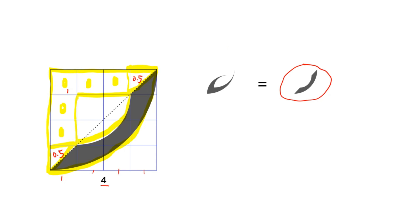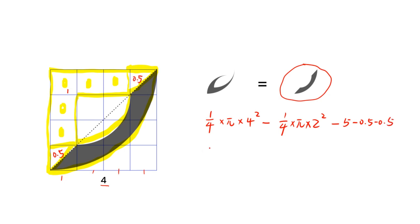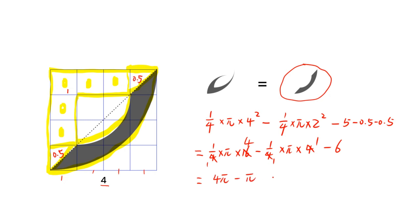So the gray shaded area is: one quarter times pi times 4 squared, minus two quarters times pi times 2 squared, minus 5, minus 0.5, minus 0.5, minus 0.5, minus 0.5, minus 6. The result is 3 times pi minus 6.